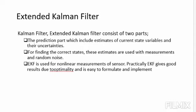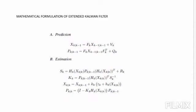Like the Kalman filter, the Extended Kalman Filter consists of two parts. The first part is the prediction part, which includes estimates of the current state variables and their uncertainty. For finding the correct current states, these estimates are used with the measurement and random noise. The Extended Kalman Filter is used for nonlinear measurement of the sensor. Practically, it gives good results due to optimality and is easy to formulate and implement due to the stochastic nature of measurement.